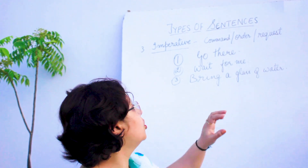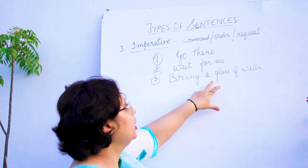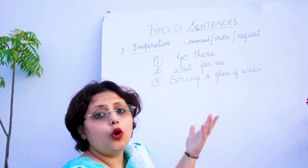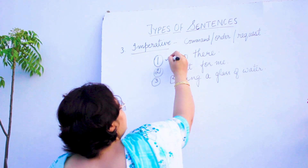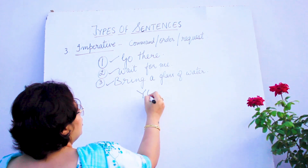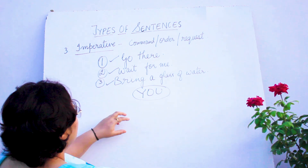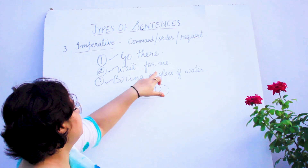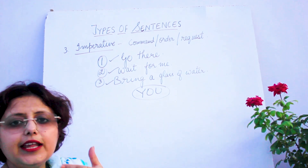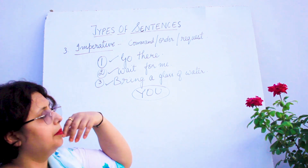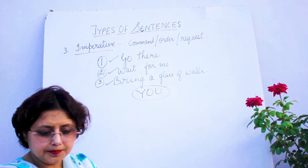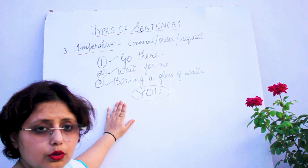In imperative sentences, there is always an implied subject. When you look carefully at 'go there,' 'wait for me,' 'bring a glass of water,' you will not find any written subject. The implied subject is 'you' — you go there, you wait for me, you bring a glass of water. In all imperative sentences, we have an implied subject called 'you.'